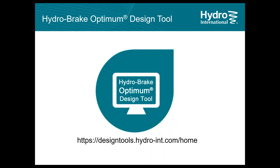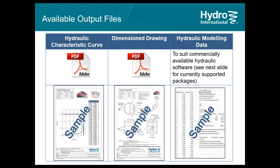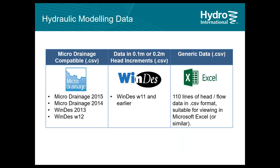We invite you to use our online design tool to size HydroBrakes — simply search 'HydroBrake Optimum design tool' and it will be the first result. From the online design tool you can generate a dimension sketch of the unit with basic information related to chamber size and outlet pipe size. You can also generate a hydraulic curve showing the unit's hydraulic behavior, and obtain modeling data in MicroDrainage or CSV format to feed into your hydraulic models.